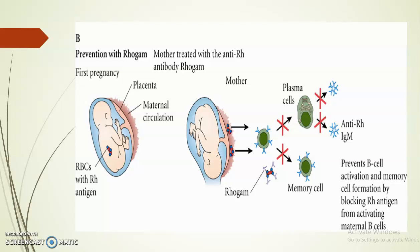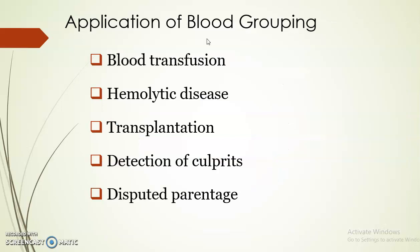That's all about erythroblastosis fetalis. The main applications of blood grouping are: blood transfusion — where it is very important to cross-match the blood samples of the donor and recipient before transfusion to avoid complications; hemolytic disease such as erythroblastosis fetalis; transplantation — where Rh typing and ABO typing must be done before transplantation to identify mismatches; and detection of culprits and disputed parentage. That's all about immunohematology — hope you all understood the session, thank you.